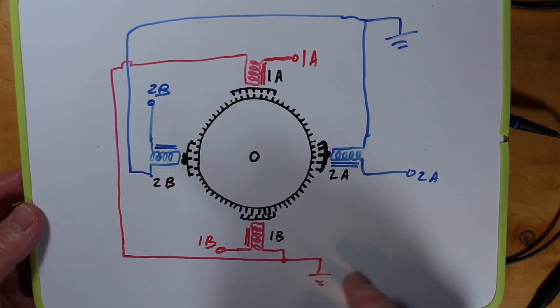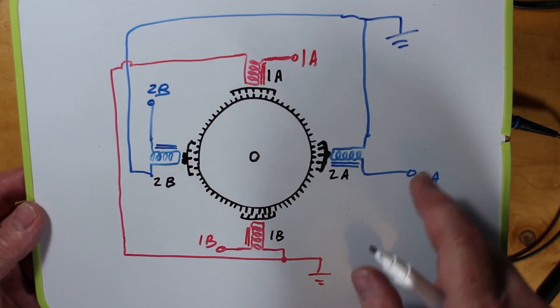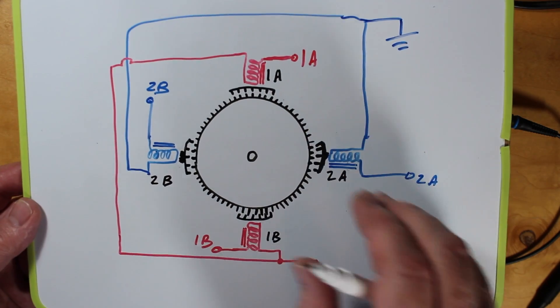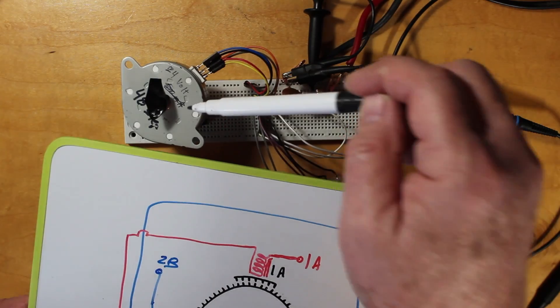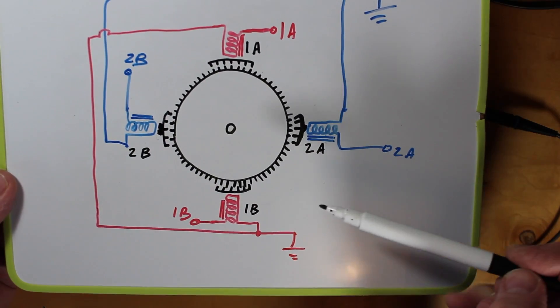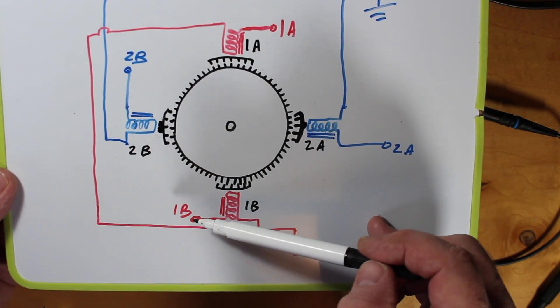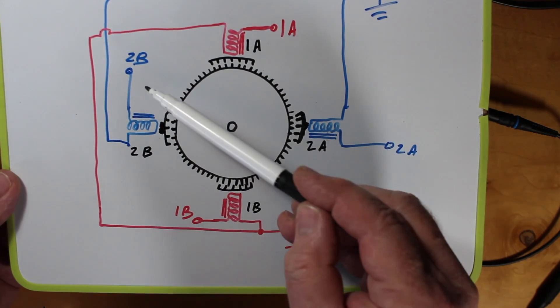So I've filled in some of the wiring on the schematic here or representative diagram to show what our situation is with this particular stepper motor. We have four connections 1A, 1B, 2A, 2B and the two grounds. That's these six wires right here.